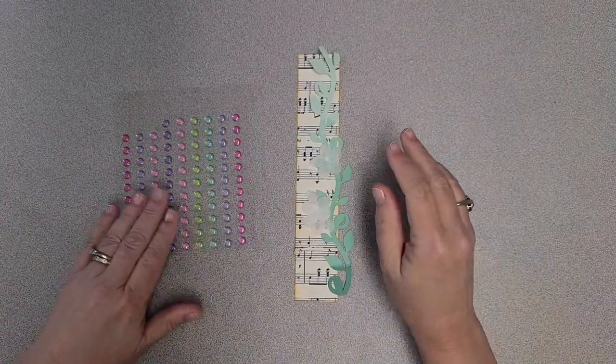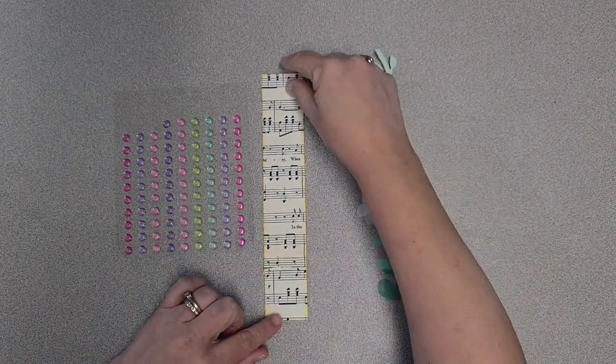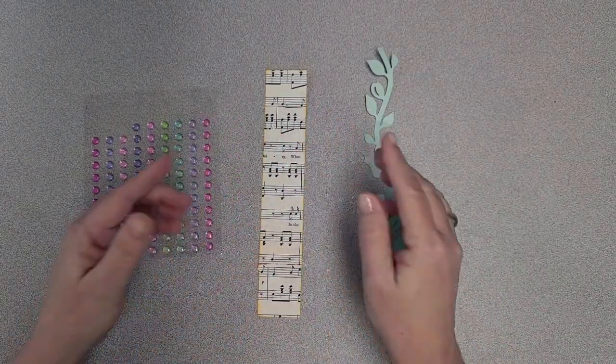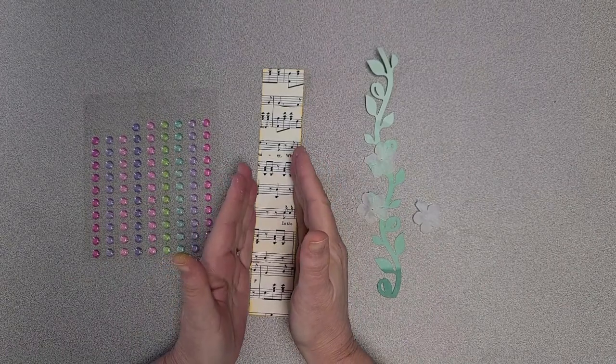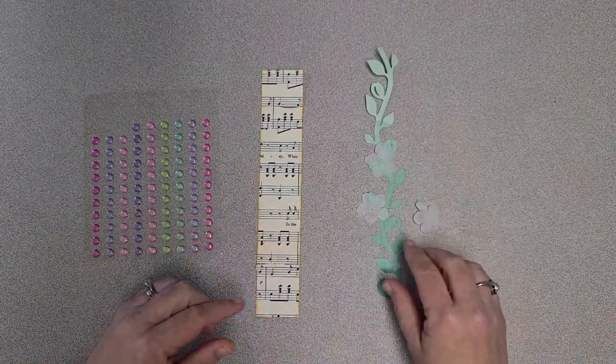Okay, so for our first ready edge, I've got a one and a half inch strip of music paper that I inked around a little bit. It's one and a half inches wide and nine inches long.